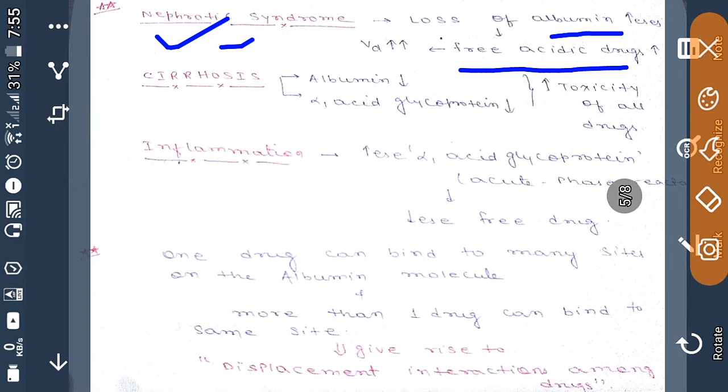If there is loss of albumin increases, then there will be more free acidic drugs. That will lead to increased volume of distribution. Now suppose there is cirrhosis of the liver. Then albumin synthesis will decrease, alpha-1 acid glycoprotein will decrease. This too will again increase volume of distribution of the drug because this will lead to more and more free acidic and basic drugs.